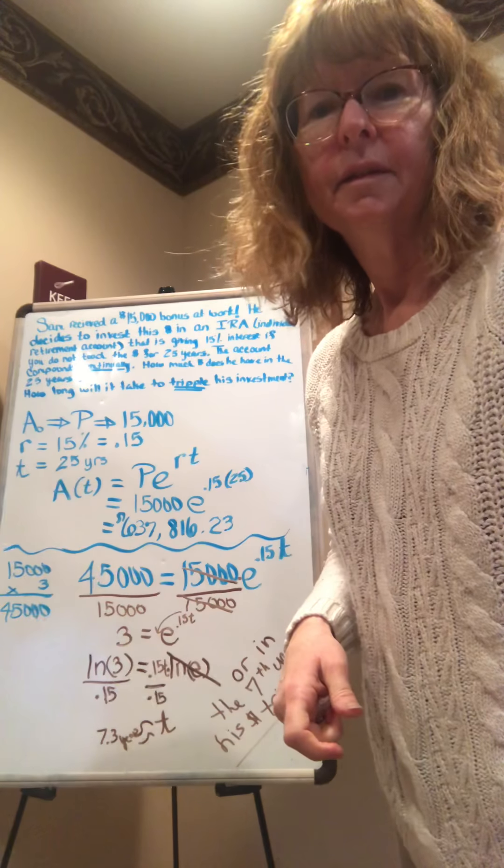So I take my calculator, natural log of 3 divided by .15, and I find out the time is about 7.3 years — so in the 7th year his money has tripled. I hope this helps those of you who are having trouble with the natural log and the E problems.